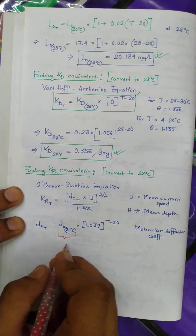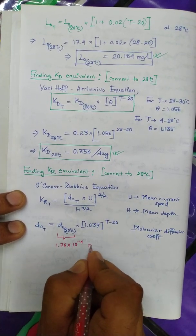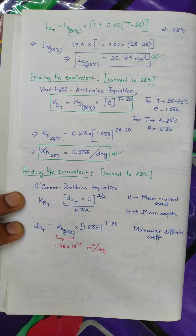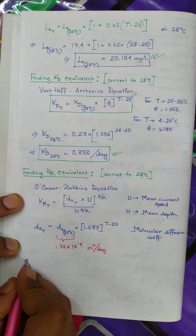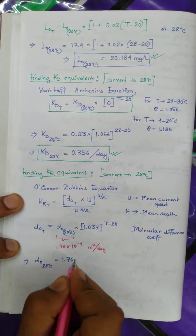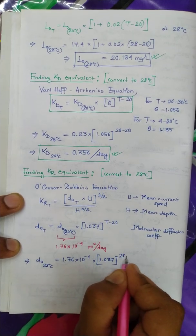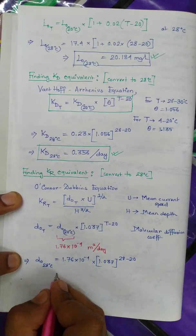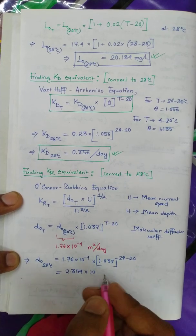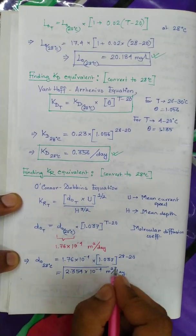The value of d₀ at 20 degrees centigrade is 1.76 × 10⁻⁴ m² per day. So d₀ at 28°C equals 1.76 × 10⁻⁴ multiplied by 1.037 to the power (28 minus 20), which comes down to 2.354 × 10⁻⁴ m² per day.